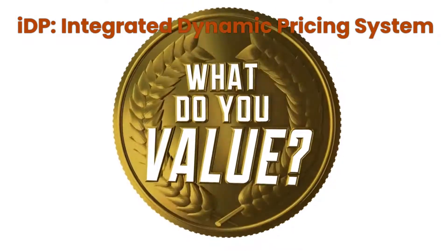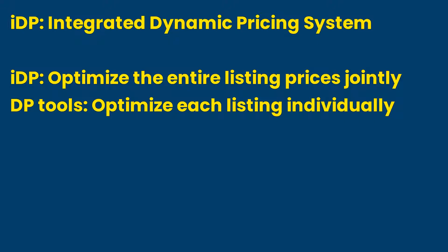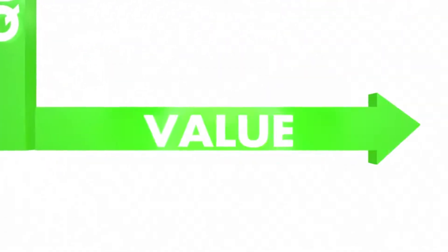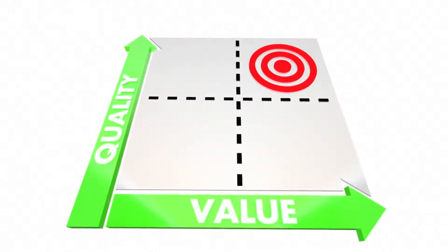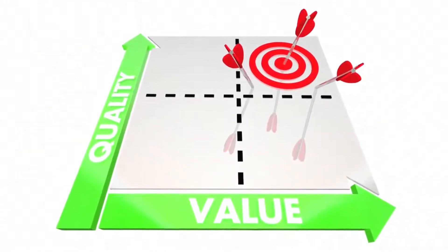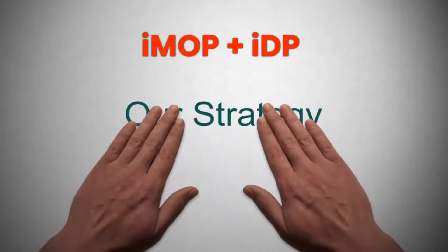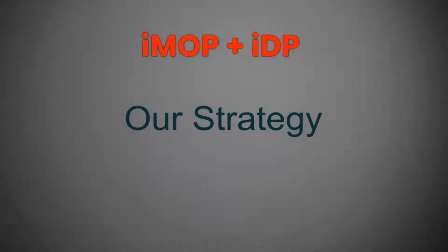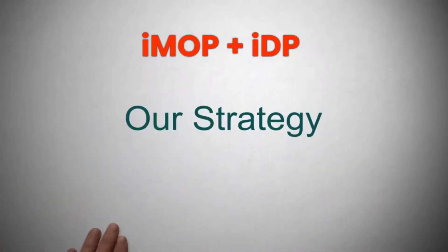One essential aspect of the IMOP system is the Integrated Dynamic Pricing, or IDP, system. When it comes to pricing, optimizing the prices of individual listings in isolation is less effective. Interestingly, almost all dynamic pricing tools treat each listing separately and attempt to optimize price for each. A better approach is to consider the interplay of all listings in the entire service, as well as other operational factors, and optimize listing prices for the entire hosting service. We will discuss the IMOP and IDP strategies in greater detail in this video series.